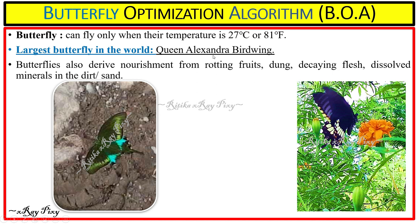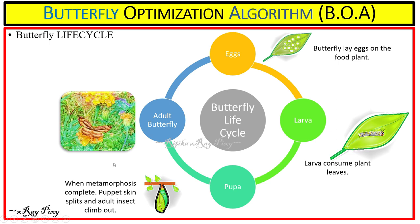The largest butterfly in the world is the Queen Alexandra's Birdwing. Butterflies also derive nourishment from rotten fruits, dung, decaying flesh, and dissolved minerals in dirt or sand. In the butterfly life cycle, first we have an adult butterfly, which lays eggs on a food plant. From the egg we have a larva, which consumes plant leaves. Larvae can communicate with ants through vibration or chemical signals, providing protection in return for honeydew — a sugar-rich sticky liquid. From larva we get a pupa, and when this phase is completed the pupal skin splits, the adult insect climbs out, its wings dry, and it can fly.